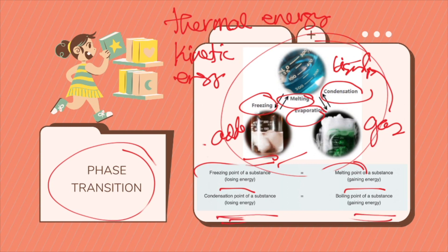Whether a substance is gaining heat and kinetic energy or losing heat and kinetic energy determines the phase change. For example, water freezes at zero degrees Celsius — the freezing point is zero degrees, which is also its melting point. When ice below zero degrees gets heated, it starts to melt at zero degrees Celsius. When water above zero degrees Celsius gets cooled, it freezes at zero degrees Celsius.